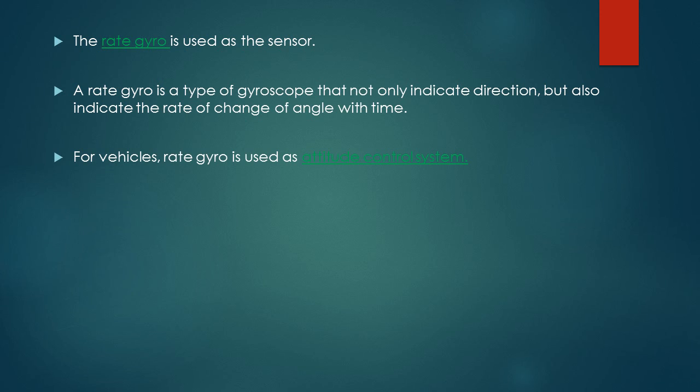So for vehicles, the rate gyro is used as the sensor for attitude control system, or we can call it the sensor for movement of the vehicles.